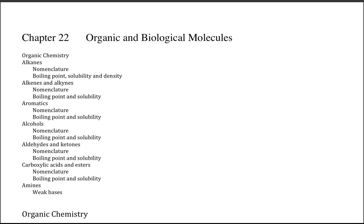Chapter 22: Organic and Biological Molecules. Our outline is organic chemistry, alkanes, nomenclature, boiling point, solubility and density. Alkenes and alkynes, nomenclature, boiling point and solubility. Aromatics, alcohols, aldehydes and ketones, carboxylic acids and esters. For all of these different groups, we will talk about nomenclature, boiling point and solubility.